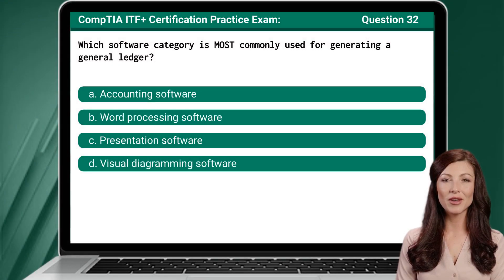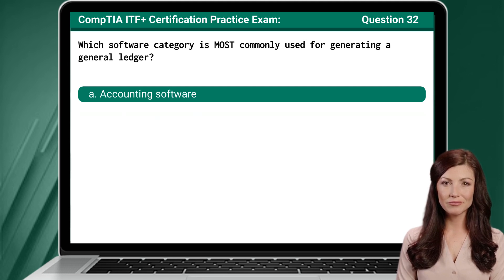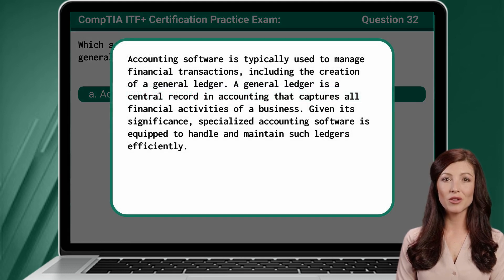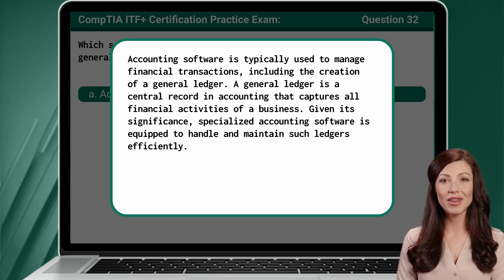Question 32. Which software category is most commonly used for generating a general ledger? The answer is A: Accounting software. Accounting software is typically used to manage financial transactions, including the creation of a general ledger. A general ledger is a central record in accounting that captures all financial activities of a business. Given its significance, specialized accounting software is equipped to handle and maintain such ledgers efficiently.